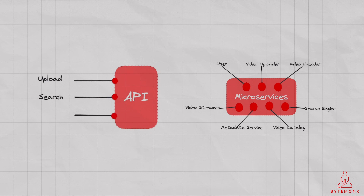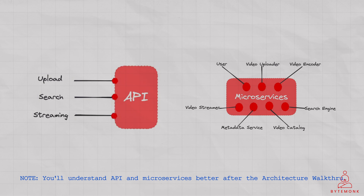Finally, the streaming endpoint allows users to stream videos from the platform. This API endpoint receives a request for video playback and generates a pre-signed URL for the appropriate video encoding. The API sends the pre-signed URL to the client application, which then uses it to stream the video from a storage service.